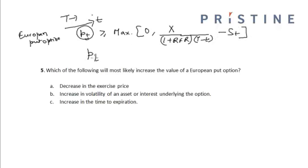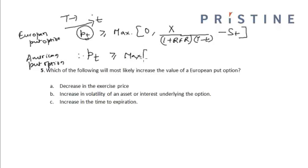For an American put option, the price of the put option at any time t is given by the maximum of zero and X minus the stock price at time t, where X is the exercise price.